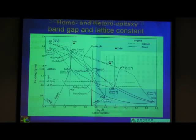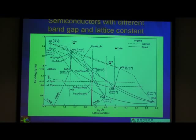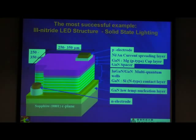Looking at the bandgap versus lattice constant diagram, you see that the available good substrates only come in GaAs, InP, and some antimonides — though some you can buy, the quality is poor and not good for epitaxy. These are the practical substrates for growing epi: GaAs, InP, and silicon. And the most successful example of metamorphic growth is gallium nitride — there's no GaN substrate, so people grow on sapphire starting with the Japanese group that really got it working in 1993.